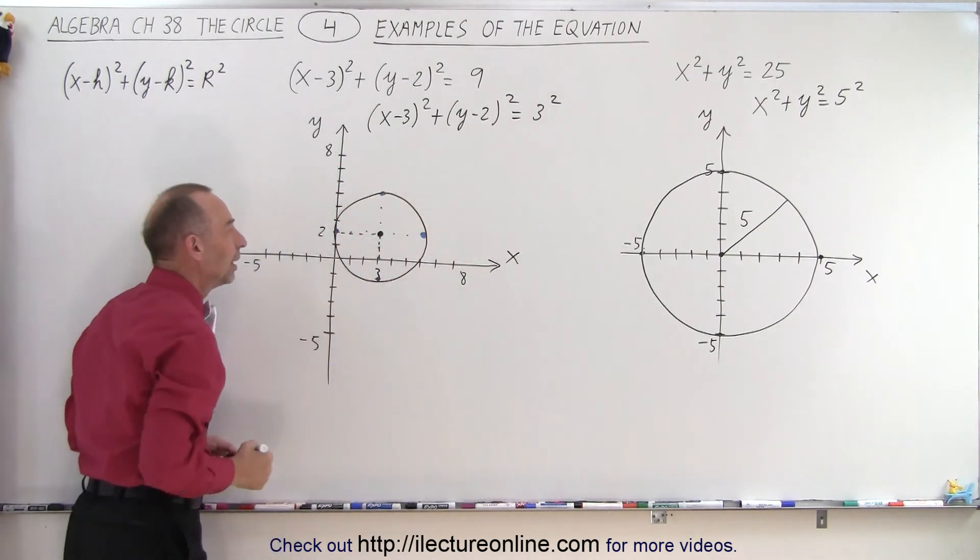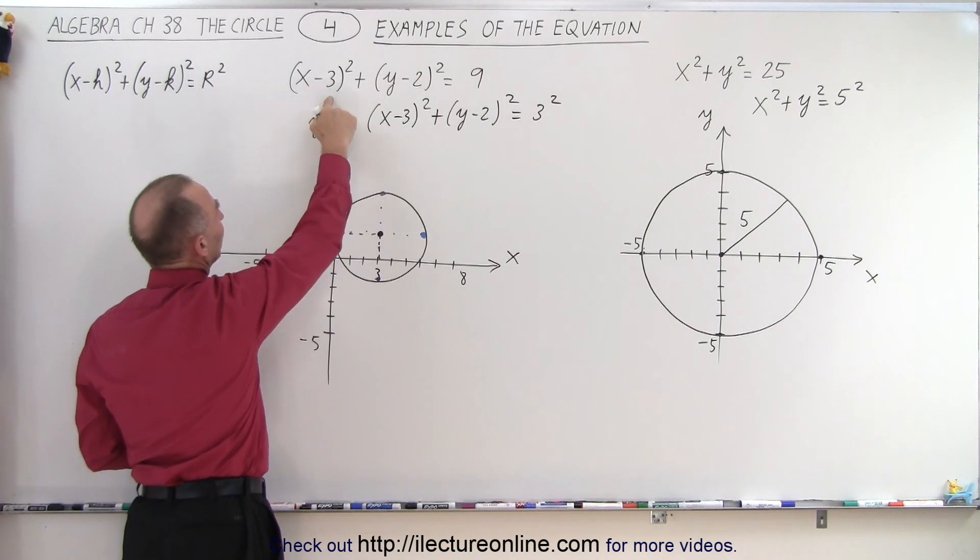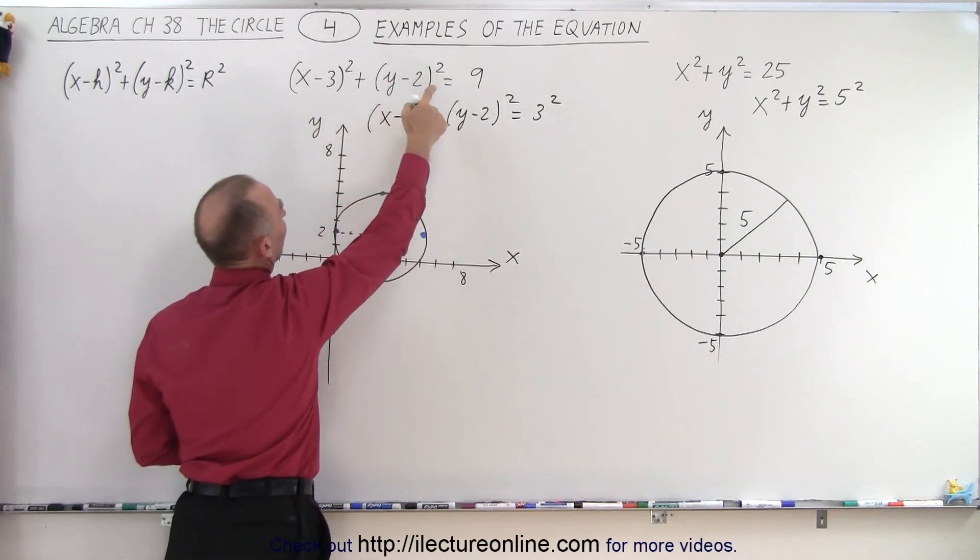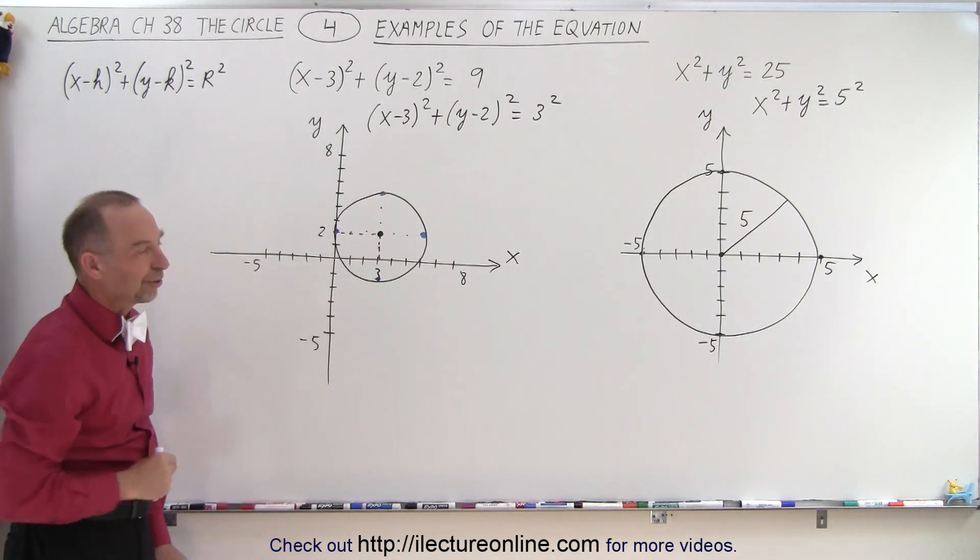And there you go. There's your circle that's representative of the equation x minus 3 quantity squared plus y minus 2 quantity squared equals 9 or equals 3 squared. And that is how it's done.